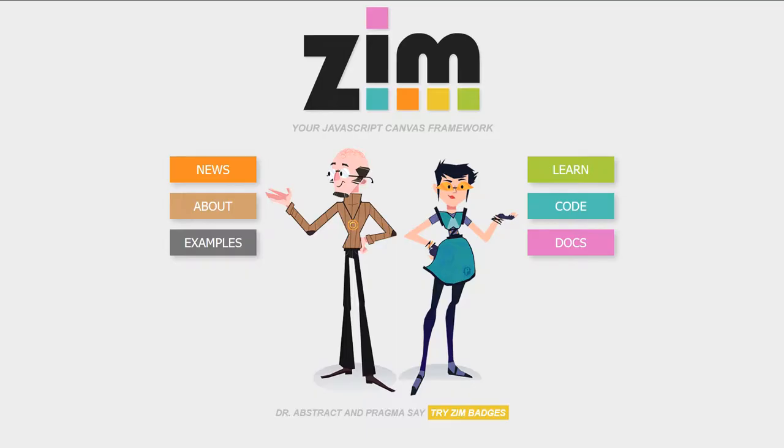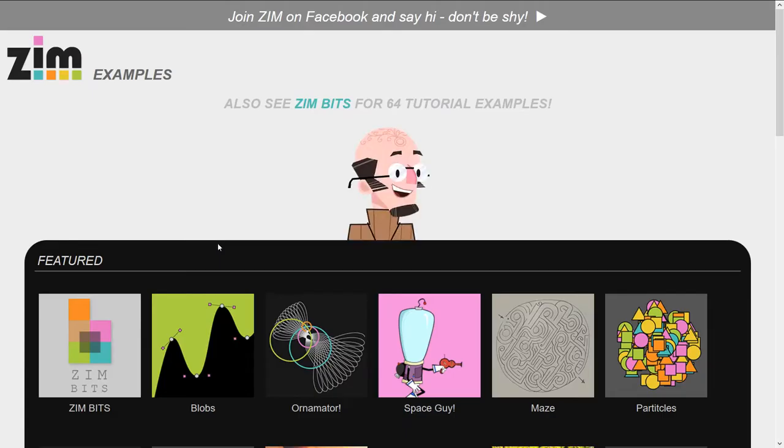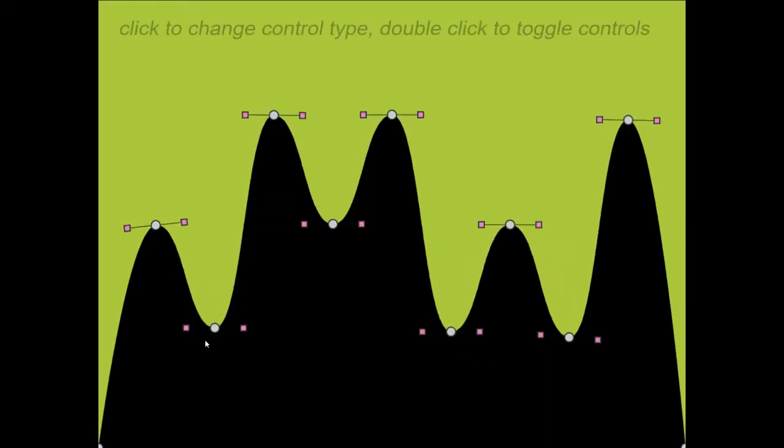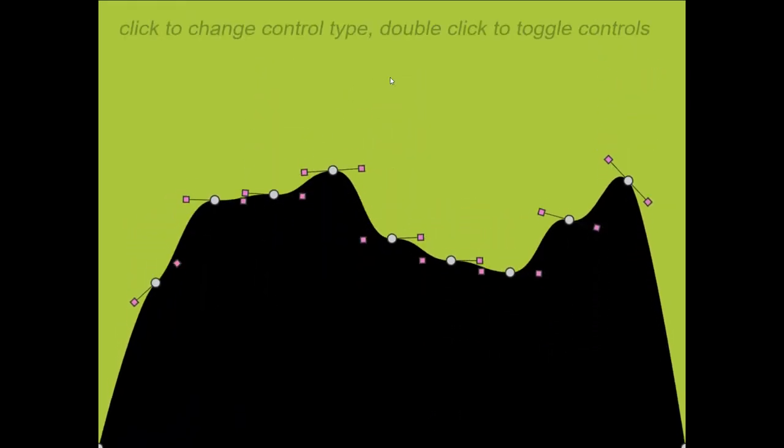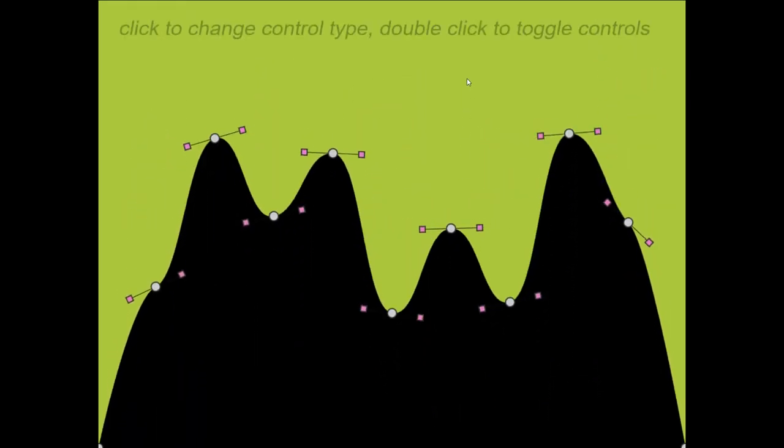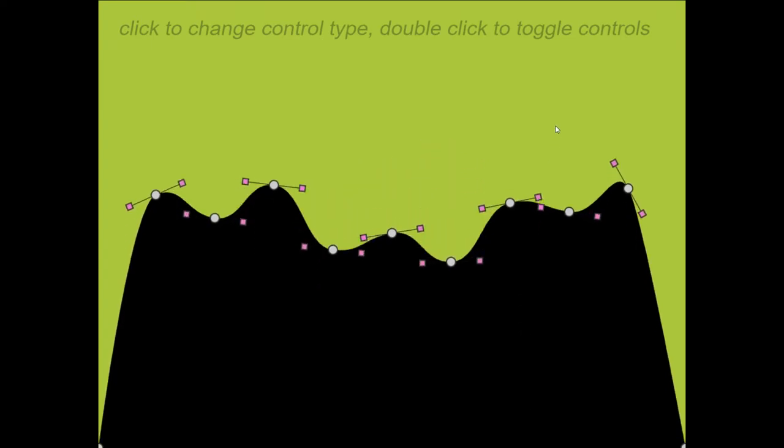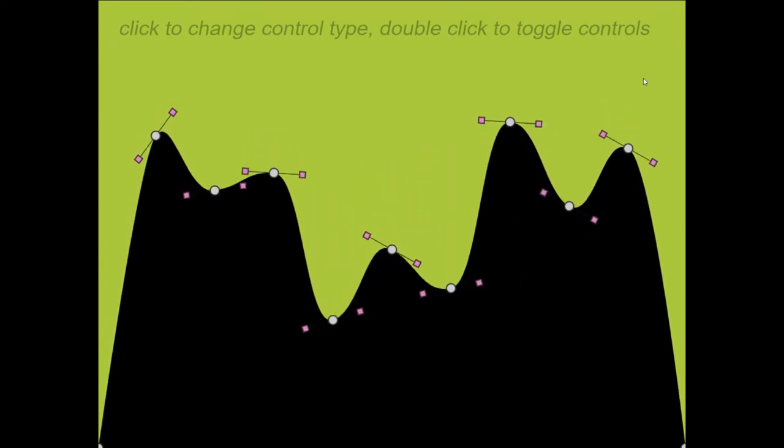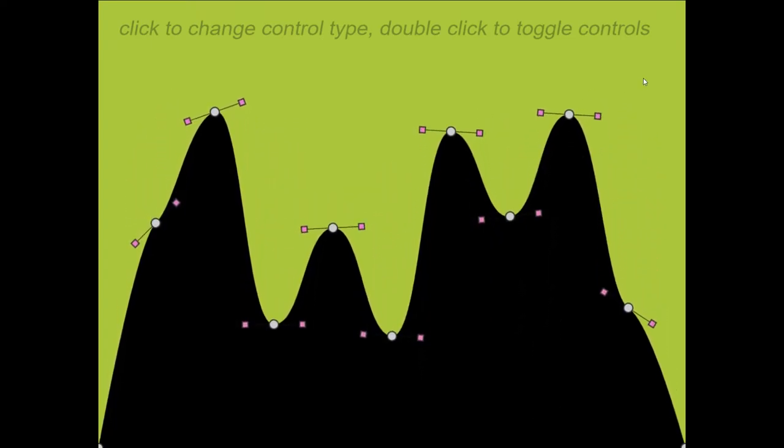Let's go to the site now and click on examples and check out the second example on blobs. Oh, look at those blobs! We can move the mouse around and it sort of follows the mouse, but it also just kind of moves nicely. Isn't that cool?